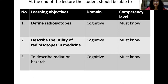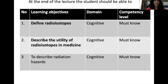The learning objectives of today's lecture are: we should know what radioisotopes are, including their definition. Then we will describe the utility of radioisotopes in medicine, and later we will describe what the radiation hazards are and what methods exist to prevent radiation hazards.